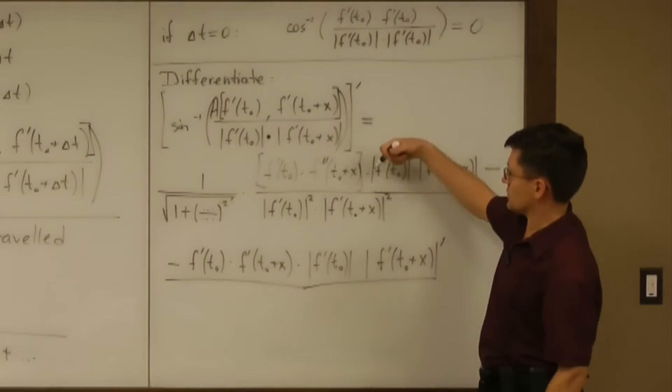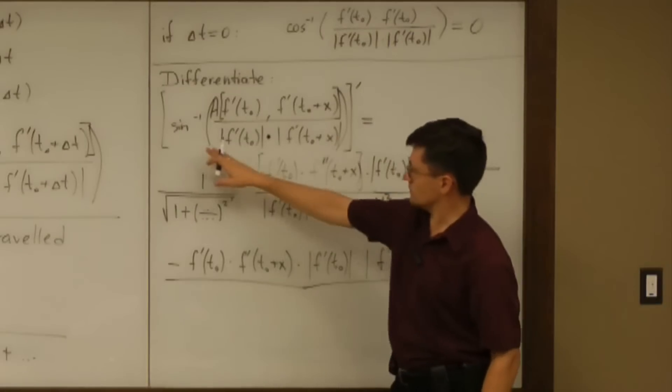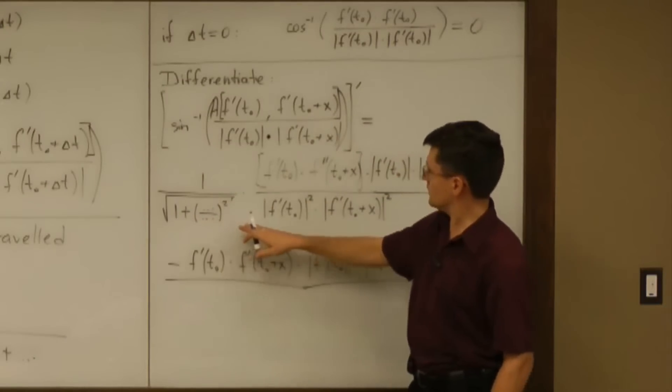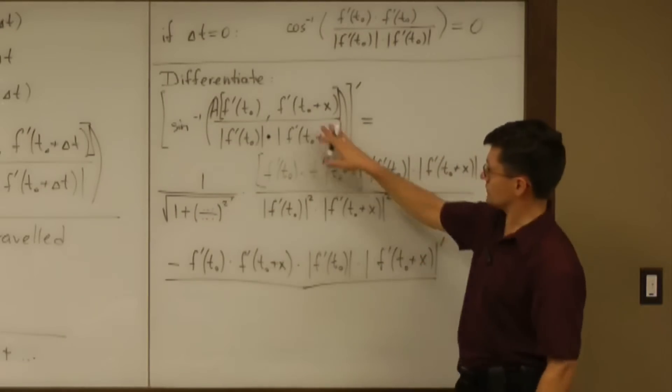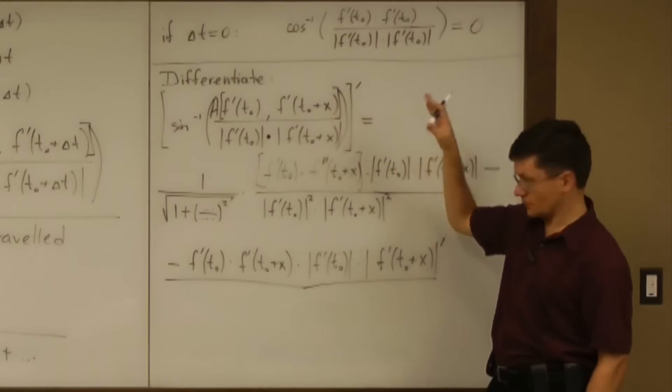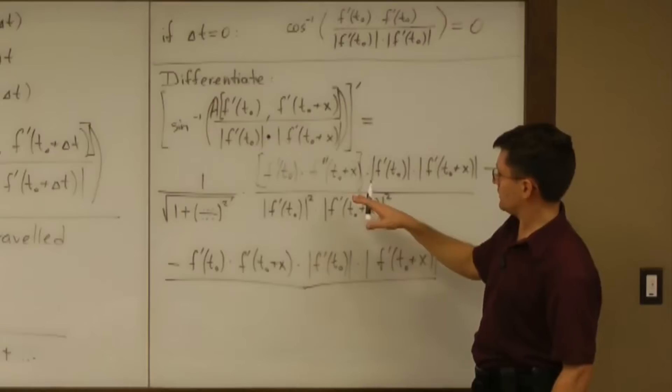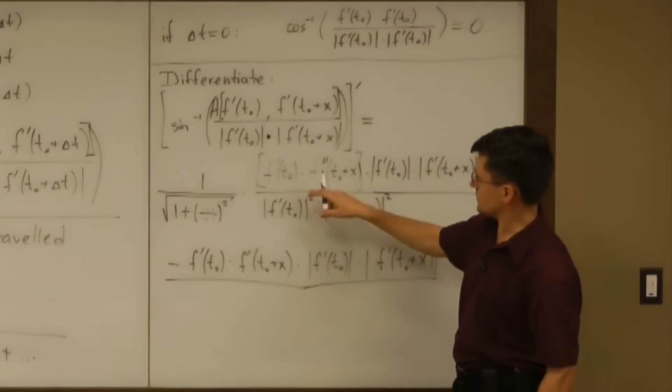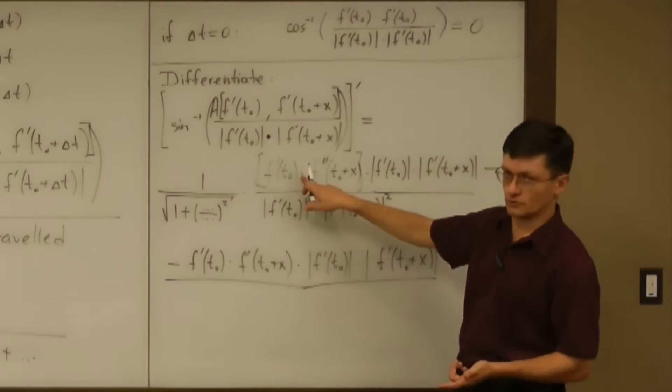So how do we differentiate? Well, the chain rule applies. And right here we have to use the quotient rule. And the numerator is still a product, so we can apply the product rule. Now all we have to do is substitute the dot product with the area product.